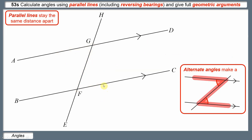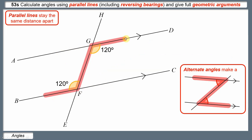There are other alternate angles on this diagram as well. This angle here and this angle here are the same — if this one's 120, this one's 120 as well. The Z shape in this case is a bit more stretched out, more like a back-to-front zigzag than a Z, but it still counts. These are still described as alternate angles.